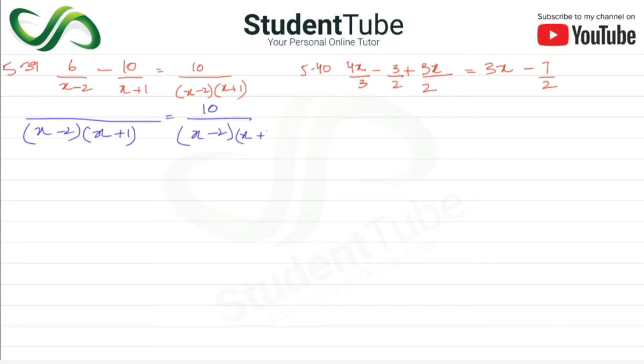Here we have to take LCM, so we will have x plus 1. Here we have 10, x minus 2 multiply. So here we have x minus 2, x minus 2.